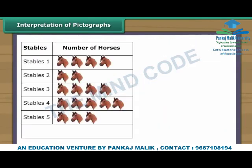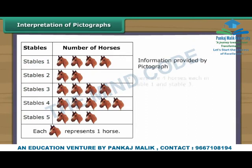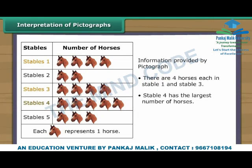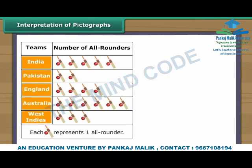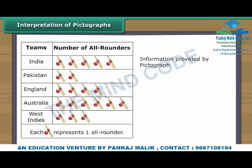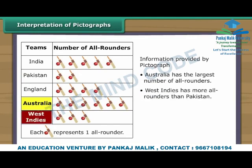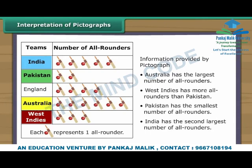Look at this pictograph. It shows details of horses in five different stables in a village. Each picture of a horse represents one horse. It is clear from the pictograph that there are four horses each in stable one and stable three. Stable four has the largest number of horses, and stable two has the least. This next pictograph shows details of all-rounders in five cricket teams of the world. Australia has the largest number of all-rounders, India has the second largest, and Pakistan has the smallest.